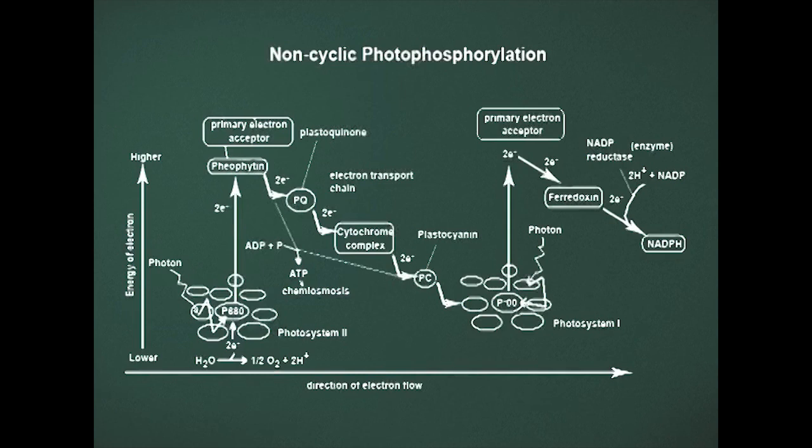The proton gradient drives the synthesis of ATP by ATP synthase located in the thylakoid membrane. Thus, the energy from sunlight has been used to produce ATP, and this process of ATP synthesis is known as photophosphorylation, which is analogous to ATP synthesis via a proton gradient during oxidative phosphorylation in mitochondria.